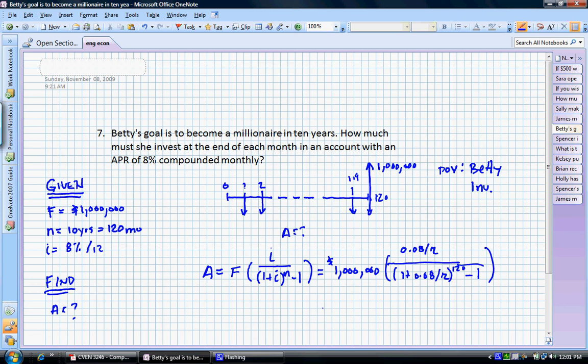Okay, and if we solve for this, A is equal to $5,466.09. So we're telling Betty, you better invest $5,466.09 every month if you want to have a million dollars in 10 years.